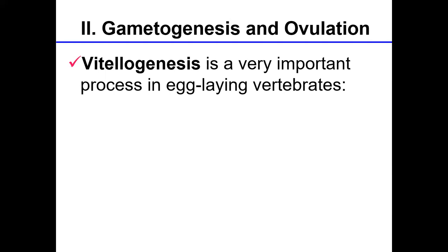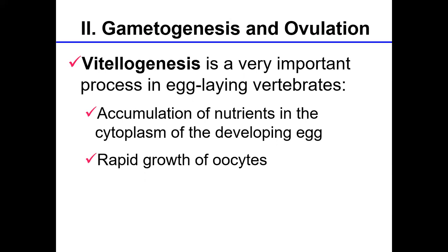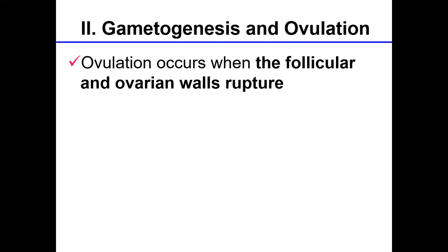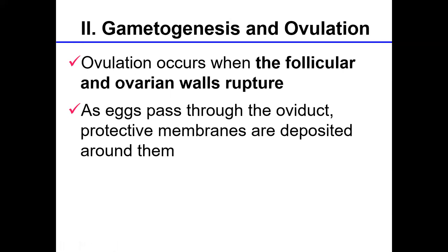Vitellogenesis is an important process in egg-laying vertebrates. It involves the accumulation of nutrients in the cytoplasm of the developing egg. These nutrients will later become the yolk and feed the offspring. During the last phase of vitellogenesis, the growth of oocytes is very rapid, and prior to ovulation the mature egg is 10 to 100 times its original size. Ovulation occurs when the follicular and ovarian walls rupture, releasing ova into the body cavity where they migrate into the oviduct. As they pass through the oviduct, various protective membranes are deposited around them, and the number of layers is species-specific.